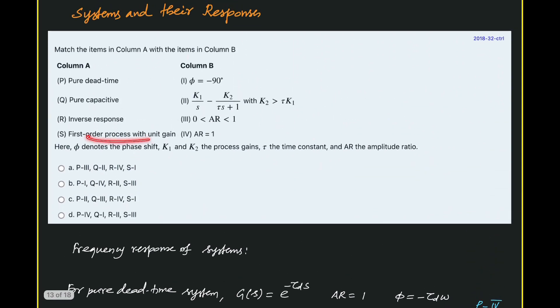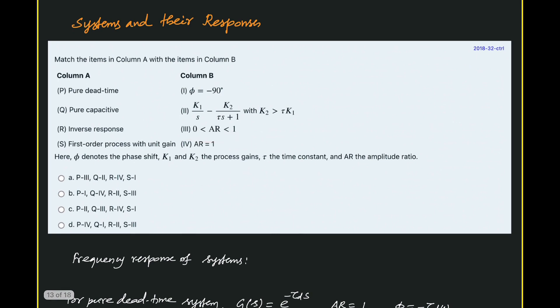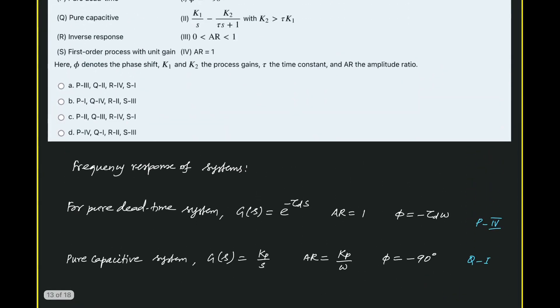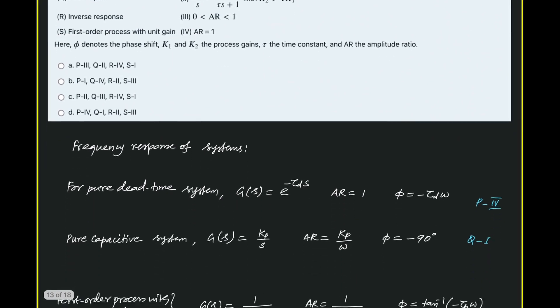For a first order system with unit gain, the transfer function is 1 / (tau_p * s + 1). AR is given as 1 / sqrt(tau^2 * omega^2 + 1), and phase angle is tan inverse of minus tau_p * omega. As omega tends to 0, AR equals 1; as omega tends to infinity, AR equals 0. So AR ranges from 1 to 0, meaning AR is within 0 to 1. Therefore S and 3 are matching.